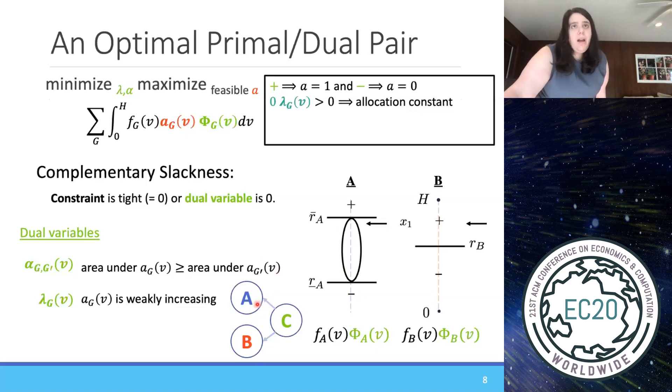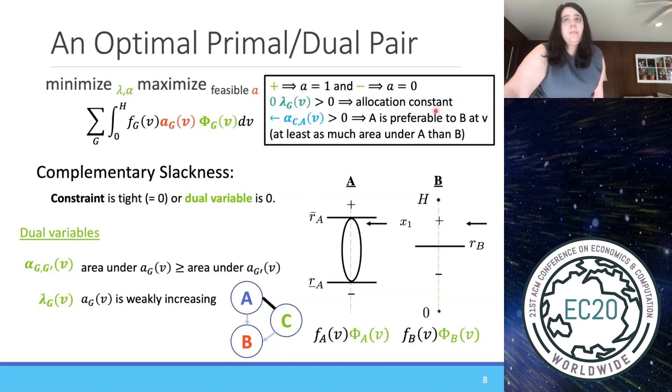This next one is tricky. What we have here is if this alpha constraint is positive, if this alpha variable is positive, then this constraint here must be tight. What does it mean for this constraint to be tight? What does it mean for the area to be tight here? Well, it means that the utility between A and C is tight. A and C are equally preferable to someone of type C. If someone of type C finds A and C equally preferable, it means that somebody of type C finds A at least as preferable as type B because somebody of type C needs to prefer type C to B because C dominates B. And so what that means is that A needs to be at least as preferable to B or that there needs to be at least as much area under A than B because utility and area under the curve are the same. And so if we see an arrow going into A, it means that there needs to be at least as much area under the allocation curve of A as there is at B.